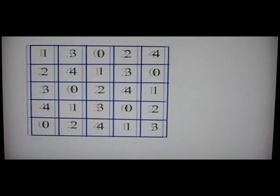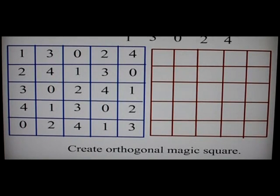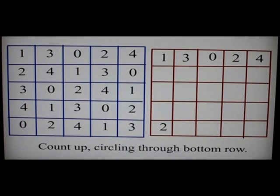Now we are going to create the orthogonal square, which we do by taking the top column and instead of counting down we count up: 1, 2, 3, 4, 0. And we begin to do this with each of the columns.